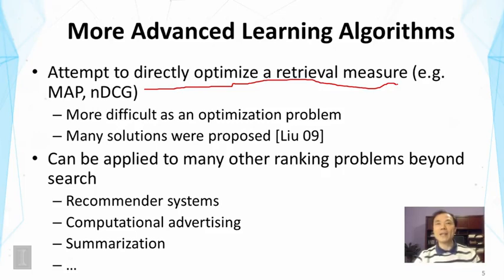One can imagine that our prediction may not be too bad — let's say both are around 0.5, so it's kind of in the middle of 0 and 1 for the two documents. But the ranking can be wrong. We might have got a larger value for d2 than d1, so that won't be good from a retrieval perspective, even though by the likelihood function it's not bad.